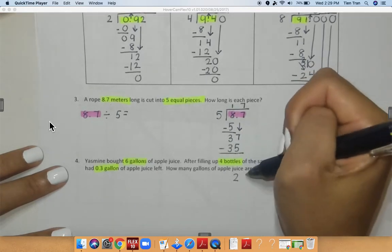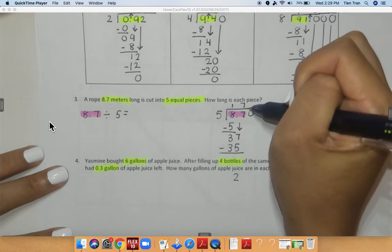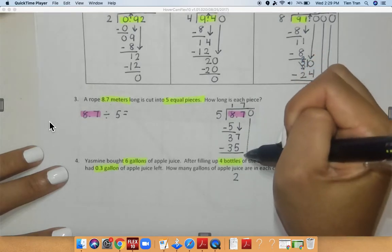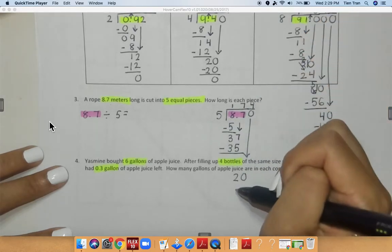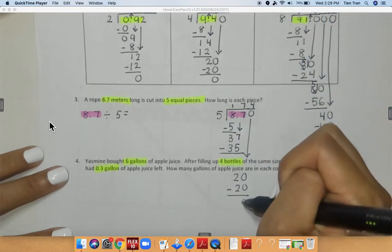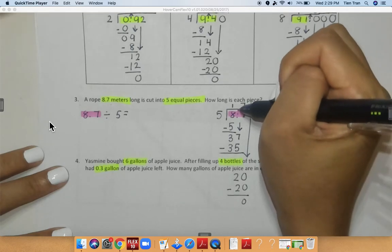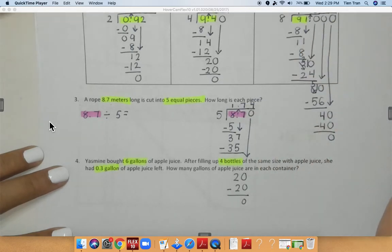I'm running out of room, so I wrote it down here. I'm going to add a zero because my remainder is two. I'm going to bring down my zero. Five can go into 20 four times. 20 minus 20 is equal to zero, and notice that I'm bringing my decimal right up.